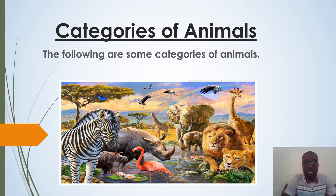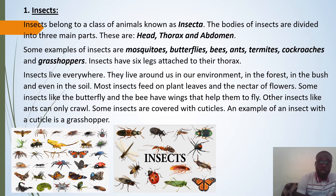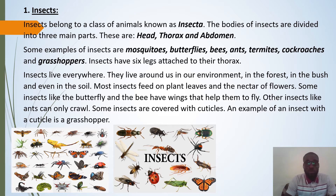Let's take a look at the categories of animals. We have insects. Insects belong to a class of animals known as Insecta. The bodies of insects are divided into three main parts: the head, the thorax, and the abdomen.